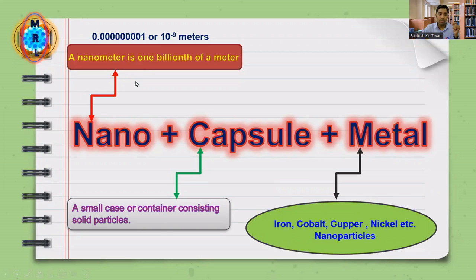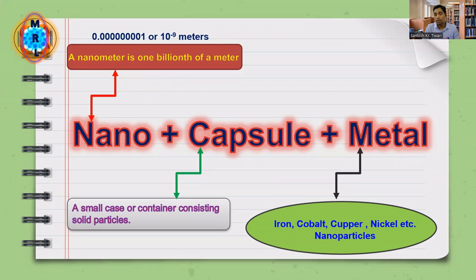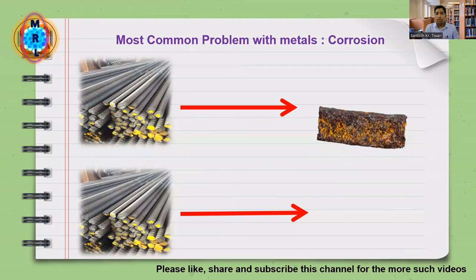Nano means the billionth part of a meter — in Indian numbers, the 10 crore part of 1 meter — so the size must be in this range, maybe 10 to 500 nanometers. Then capsule: something has a container as an upper layer with another material inside, and that inner material is metal. So nano, capsule, and metal are the three basic components of carbon encapsulated nanomaterials.